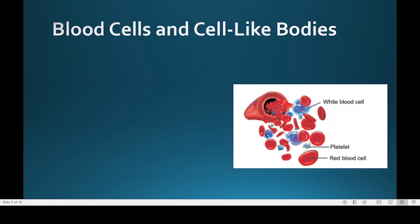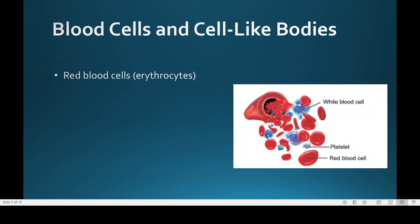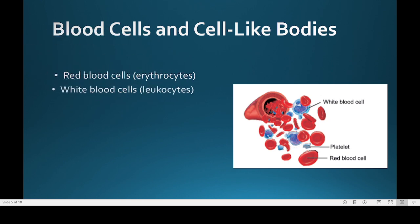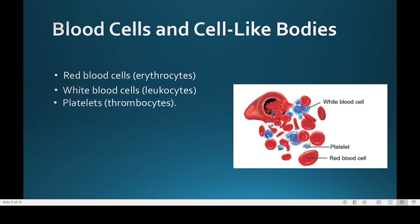Blood cells and blood-like bodies are classified into three groups: red blood cells, known as erythrocytes; white blood cells, known as leucocytes; and platelets, also known as thrombocytes. In the diagram, the white blood cells, red blood cells, and small structures known as platelets can be seen.